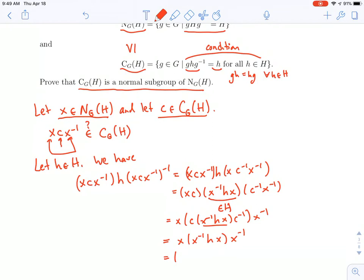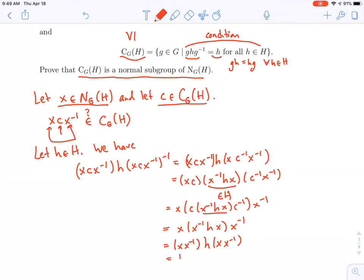One last couple of reassociations. Put the x and the x inverse next to each other. And I see those are going to cancel, and I'm left with just h.